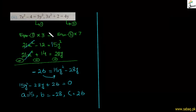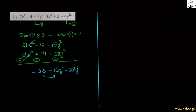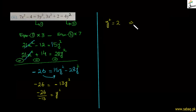Question میں correction ہے: 4y² ہے، اس لحاظ سے 28y² بنے گا۔ Equation number 1 کو 3 سے multiply کریں تو 15y²، equation 2 کو 7 سے multiply کریں تو 28y²۔ Subtraction کے بعد −13y² = −26، تو y² = 2، یعنی y = ±√2۔